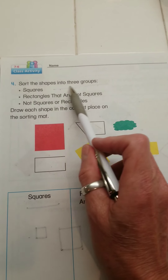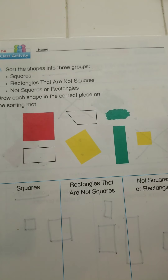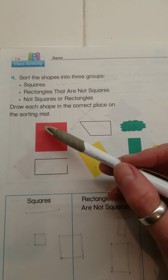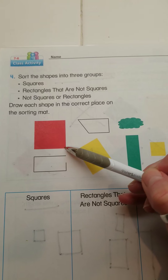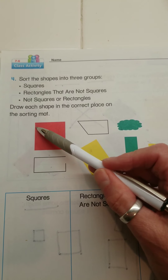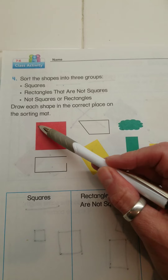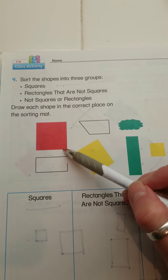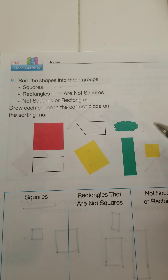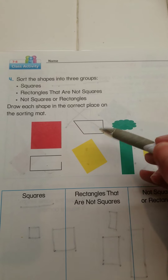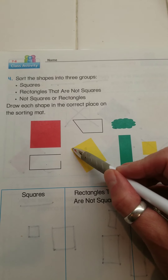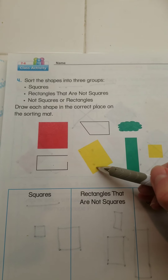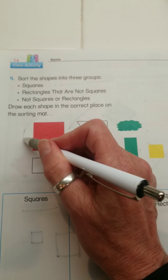It says sort the shapes into three groups — squares. So I'm looking for squares first. Squares are ones that have all four of the same size lines on the sides, so all four sides are the same length or equal length. When I look at this yellow one, I can see that one side is a little bit longer, so this is not a square. This red one here is a square.